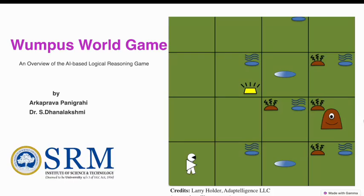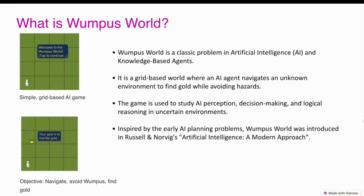Wumpus World Game: an overview of the AI-based logical reasoning game. Wumpus World is a classic problem in artificial intelligence, AI, and knowledge-based agents. It is a grid-based world where an AI agent navigates an unknown environment to find gold while avoiding hazards. The game is used to study AI perception, decision-making, and logical reasoning in uncertain environments. Inspired by early AI planning problems, Wumpus World was introduced in Russell and Norvig's Artificial Intelligence: A Modern Approach.